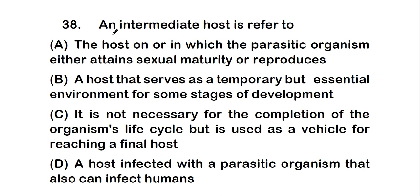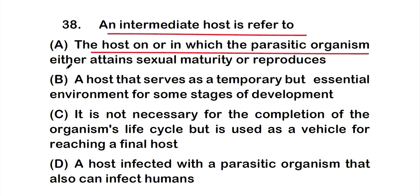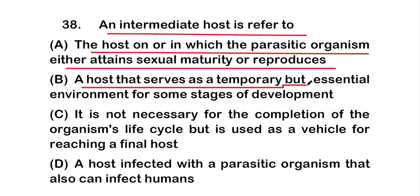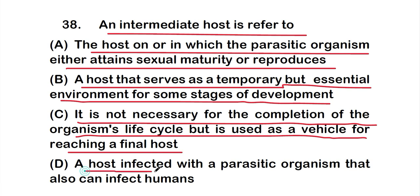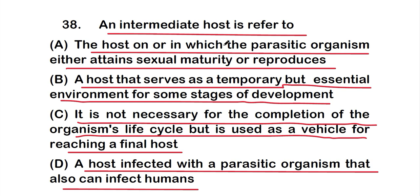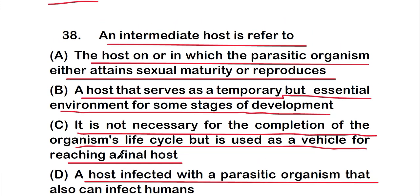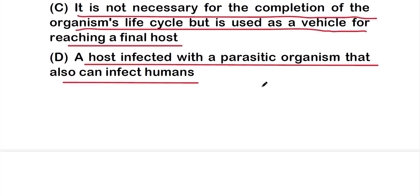Question number 38: An intermediate host refers to — Option A: the host in which the parasitic organisms attain sexual maturity or reproduce, Option B: a host that serves as a temporary but essential environment for some stages of development, Option C: not necessary for the organism's life cycle but used as a vehicle for reaching a final host, or Option D: a host infected with a parasitic organism that can also infect humans. The right answer is Option B.